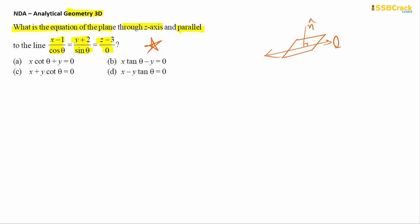Let me explain the solution. When a line is parallel to a plane, it will be perpendicular to the normal, because the normal is always perpendicular to the plane. If line and plane are parallel, the line will be perpendicular to the normal. To handle these questions, the dot product of direction ratios equals zero.